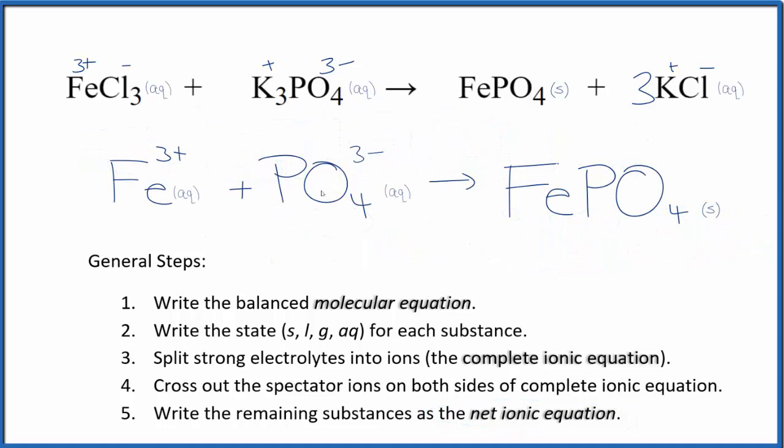So this is the balanced net ionic equation for iron 3 chloride plus potassium phosphate. You note the atoms, they're balanced, and charge is balanced as well. We have 3 plus, 3 minus. That adds up to 0. Over here, neutral compound, net charge of 0.